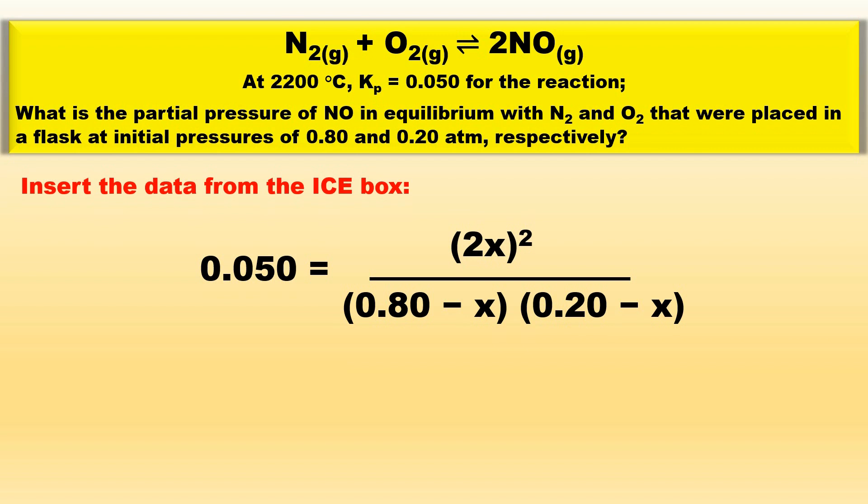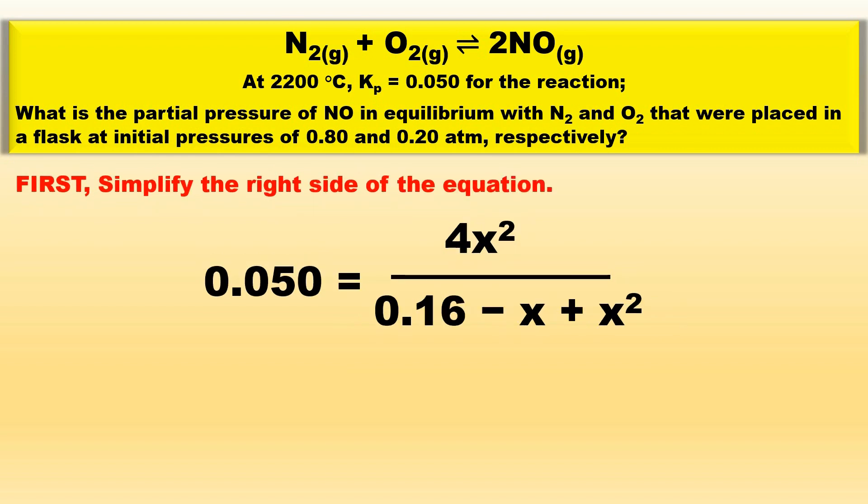This is not a perfect square so we must write a quadratic equation. Simplifying the right side first, 0.050 is equal to 4x squared divided by 0.16 minus x plus x squared.